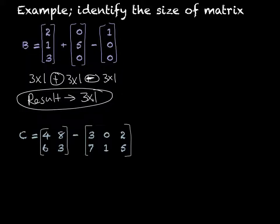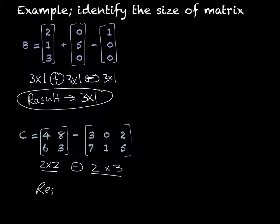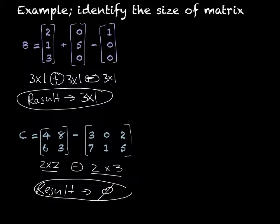In this next example, we want to subtract a two by two, subtracting off a two row by three column. So because these are not the same, the result is no solution. We cannot subtract these two matrices.